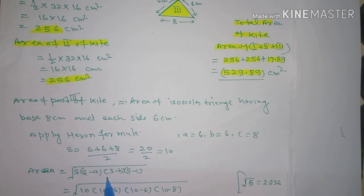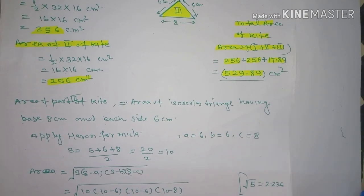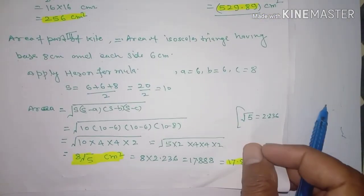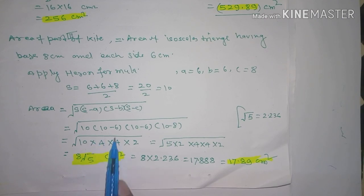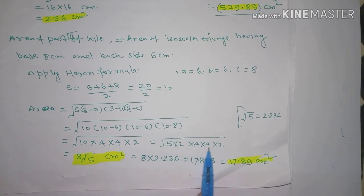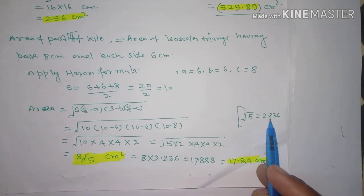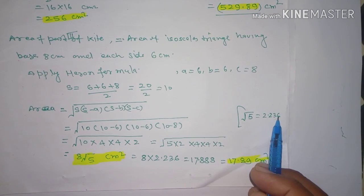Putting values: √[10(10-6)(10-6)(10-8)] = √[10 × 4 × 4 × 2] = √320 = √(64 × 5) = 8√5. Taking √5 value as 2.236, we get 8 × 2.236 = 17.88 cm². This is the area of the third part.